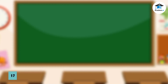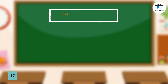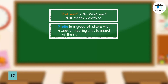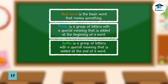Summary: Many words are made up of word parts called prefixes, root words, and suffixes. The root word is the basic word that means something. A prefix is a group of letters with a special meaning added at the beginning of a word; a suffix is added at the end. When a prefix and/or suffix is added to a root word, it changes the meaning and a new word is formed. It is also important to remember that the spelling of root words may change as they are combined with suffixes.